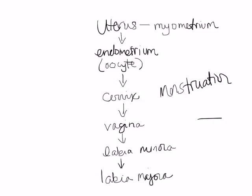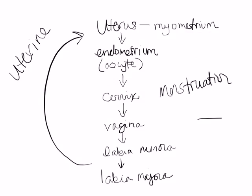So that's menstruation: on a monthly basis, the endometrium grows, is then released through the cervix, vagina, and the labia, and then begins to grow again as needed. This is called the uterine cycle, which is happening at the same time but on a slightly different schedule than the ovarian cycle.